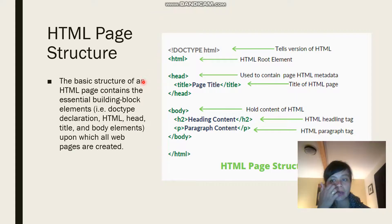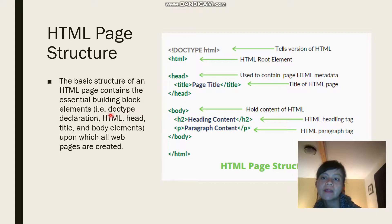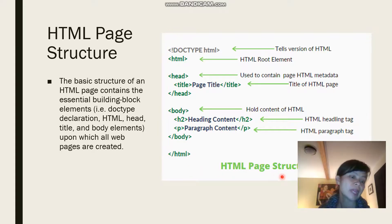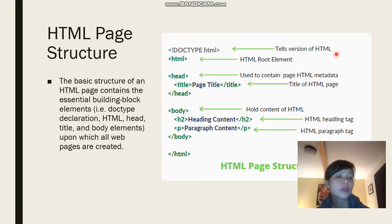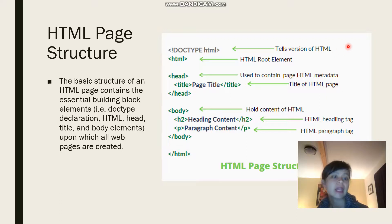We also have the HTML page structure. The basic structure of an HTML page contains essential building block elements like the doctype declaration, HTML, head, title, and body elements. The doctype declaration tells the browser what version of HTML this is, so it can render it properly. It has to be the first thing in an HTML document.